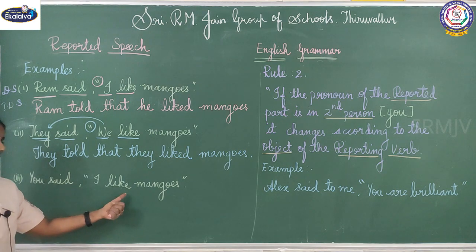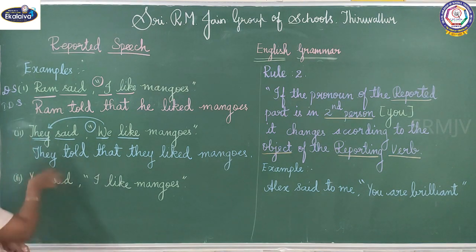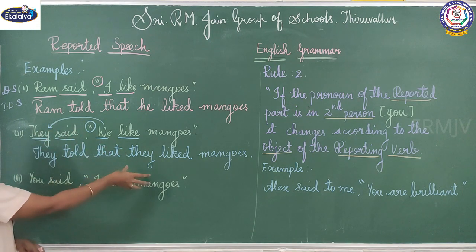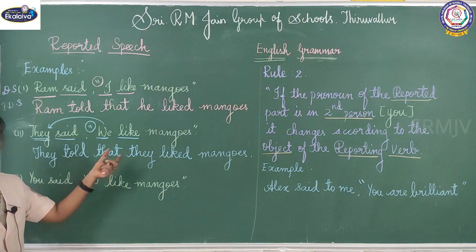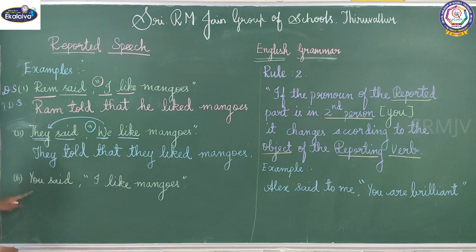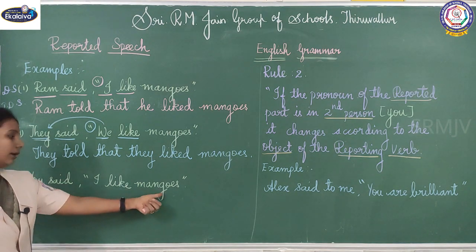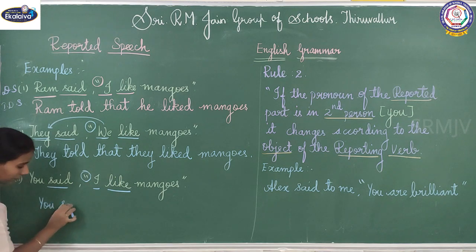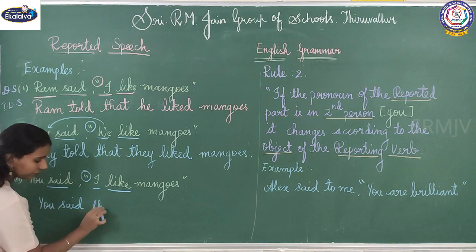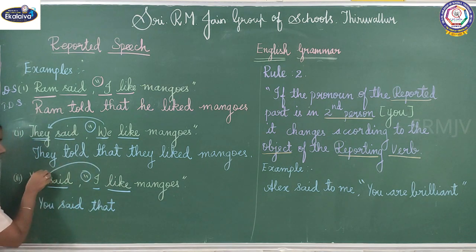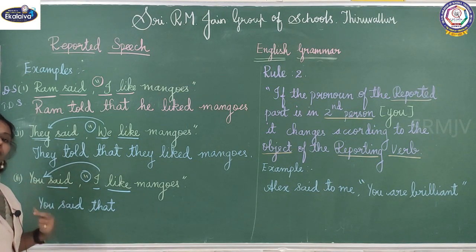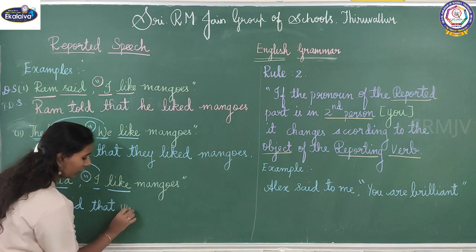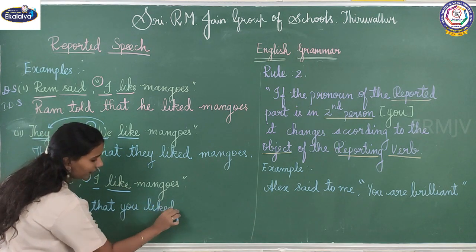You said, 'I like mangoes.' Here we are changing the subject of the reporting part to see the corresponding change in the pronoun of the reported part. The changes go in the said→told, the quotes→that, and the pronoun. The pronoun 'I' should change according to the subject of the reporting verb. 'You' is already a pronoun, so we use the same 'you'. You told that you liked mangoes.